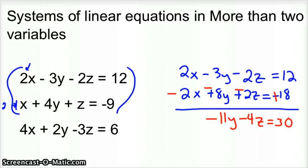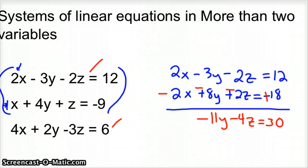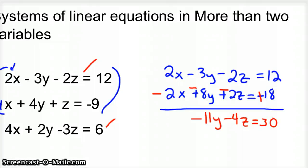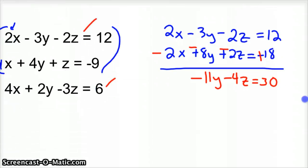And so now we need to do the same thing so we can get another equation with just two variables. So now let's look at the top equation and the bottom equation and we'll eliminate those. This time we're going to match up our x's, but we're going to have to match up four. So I'm going to multiply the top equation by two.